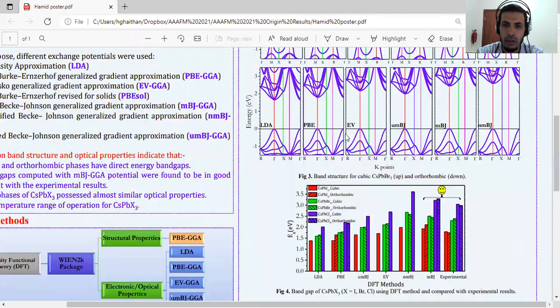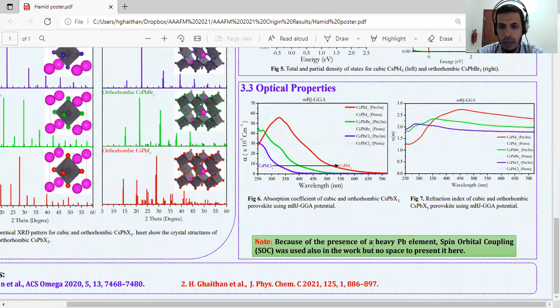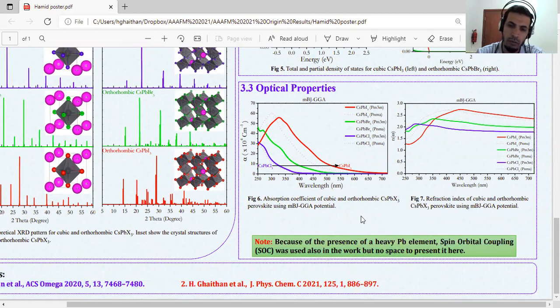All this work was almost done before, with addition to spin-orbit coupling, because we have a heavy lead element and spin-orbit coupling is very important to be used to study energy bandgap. But in this work we did not mention because we have not space to mention. Thank you so much.